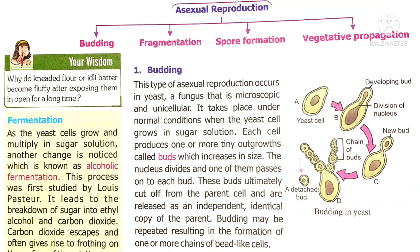Budding is an asexual mode of reproduction which takes place in yeast, a fungus which is a microorganism — that is, a unicellular organism. You might have heard about alcoholic fermentation. Alcohol is prepared by fermentation in which this unicellular organism yeast is involved, and it undergoes the budding method of asexual reproduction. The yeast cell grows and multiplies in sugar solution by the process of budding to produce alcohol.